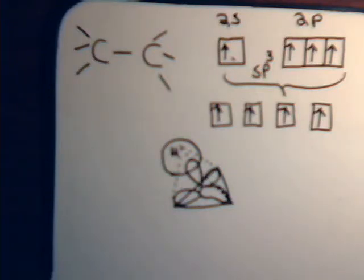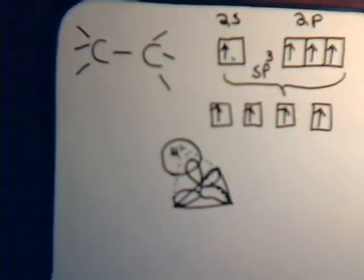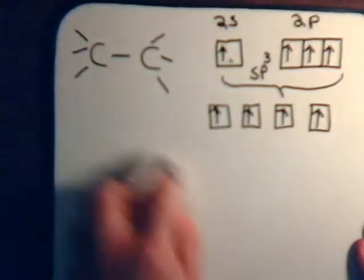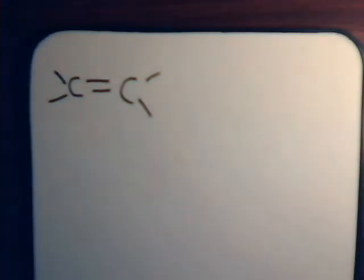And that, then, is our arrangement when carbon is sp3 hybridized and we have four individual single bonds. Now, in the case of ethylene, now we have a double bond between the two carbons.